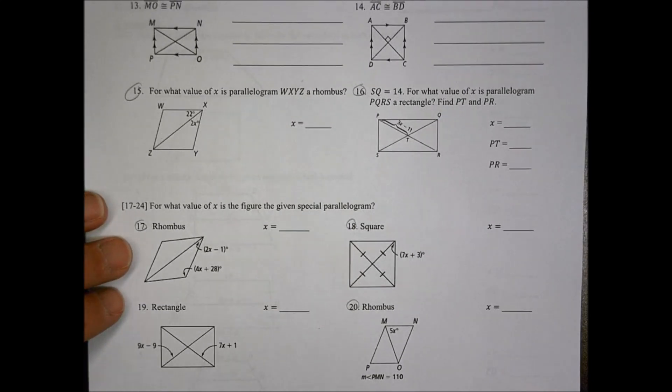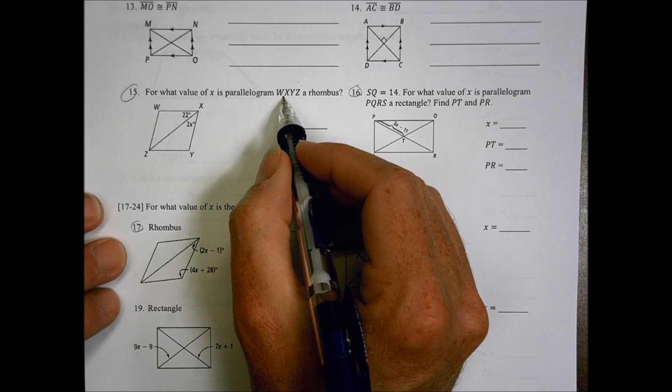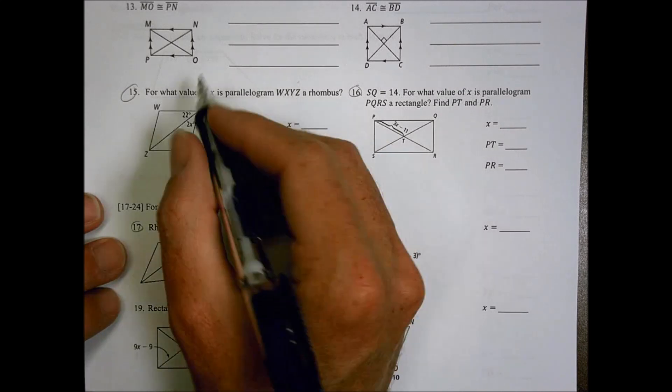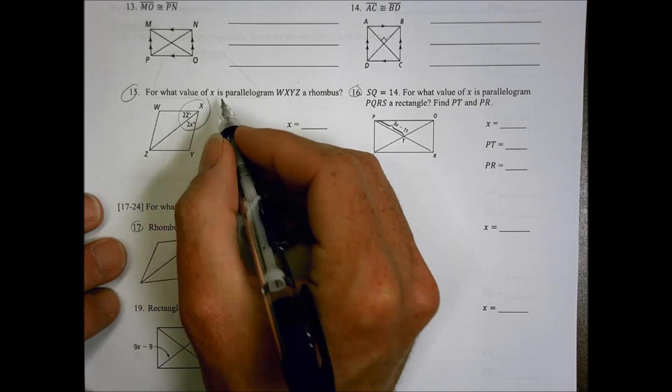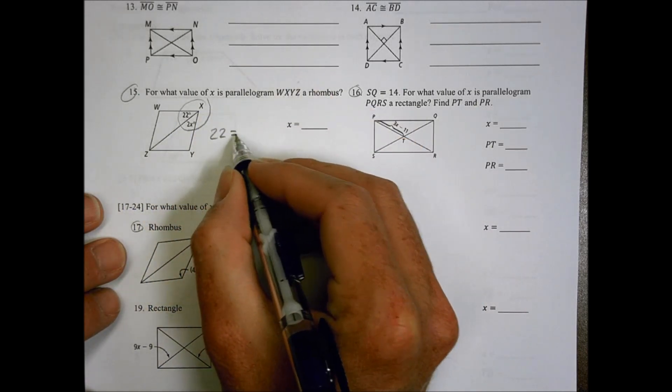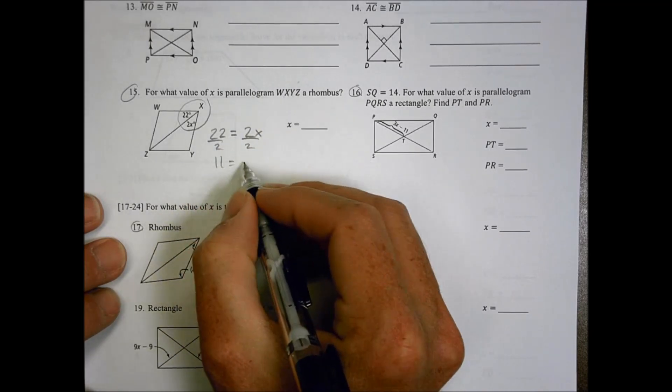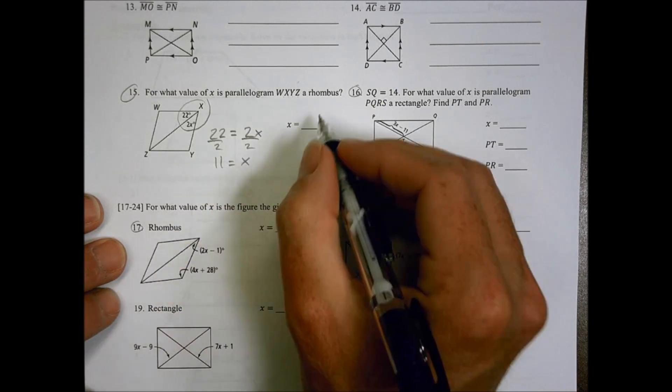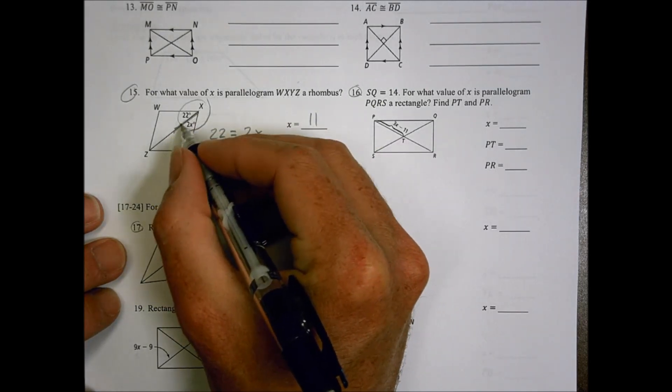Number 15. For what value of X is parallelogram WXYZ a rhombus? So for this to be a rhombus, this would need to be an angle bisector. That would mean that 22 degrees has to equal 2X. So I divide by 2, divide by 2, and so if X equals 11, then I have an angle bisector with a diagonal, and it means I also have a rhombus.